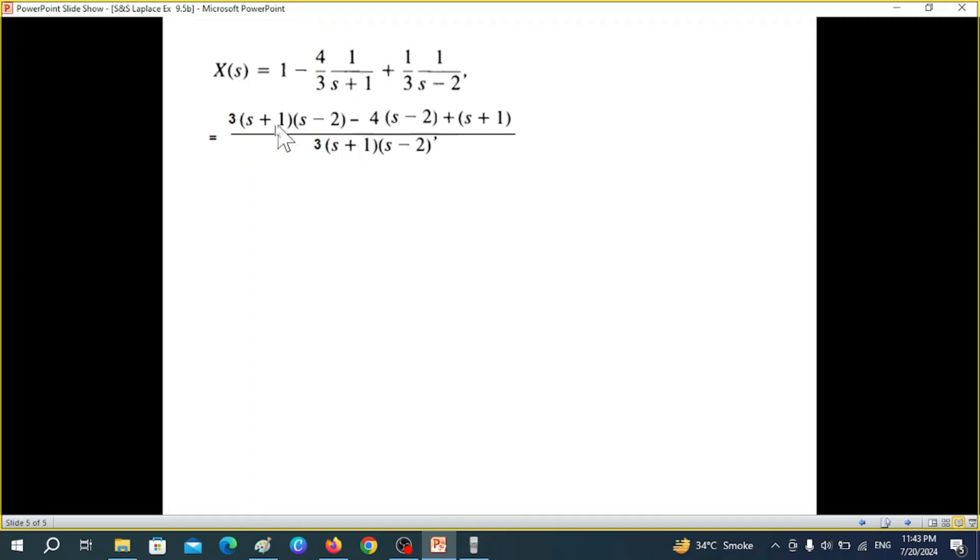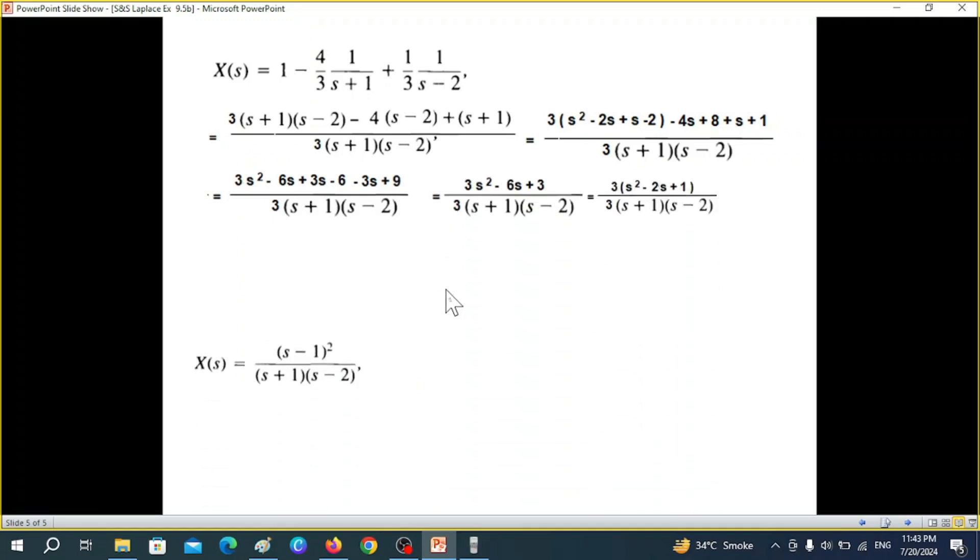And now if you want you can take the LCM and solve this. So we have shown these steps. And so this is the final value function of x s. And now this was the ROC. And now we can plot zero and poles.